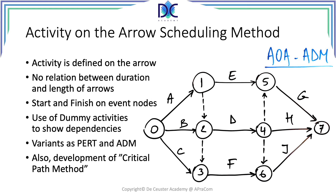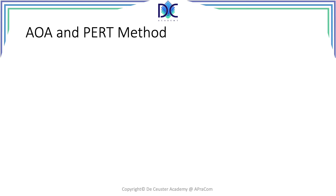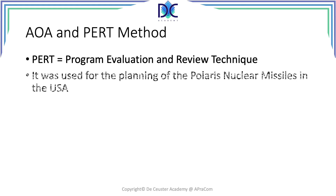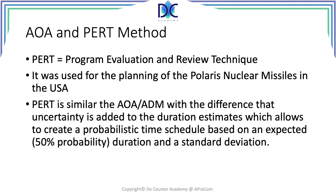The activity-on-arrow method and the Arrow Diagramming Method were among the first ways to create network diagrams, and the Critical Path Method was developed based on them. Now let's look at what we call the AOA and PERT method. PERT stands for Program Evaluation and Review Technique, and it was originally used for planning the Polaris nuclear missiles in the USA. The PERT diagram is similar to the arrow diagram, but it adds elements of uncertainty to duration estimates.